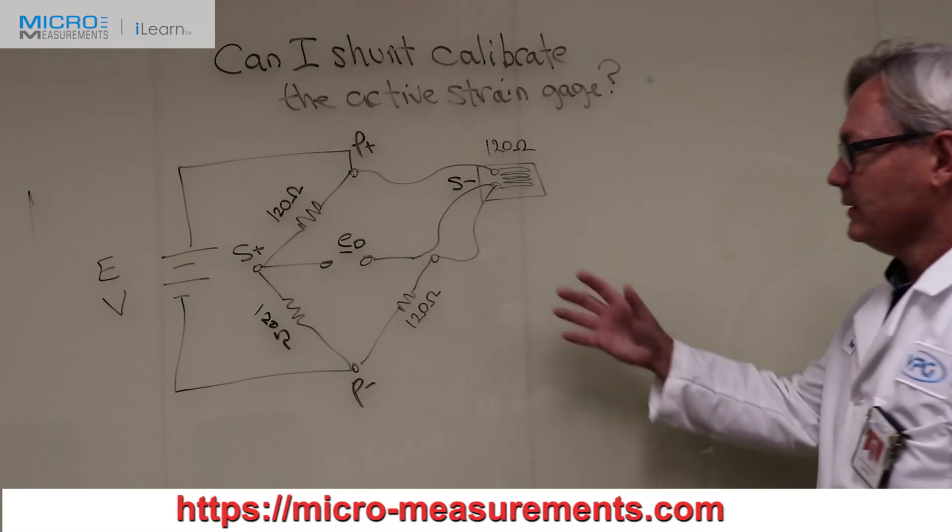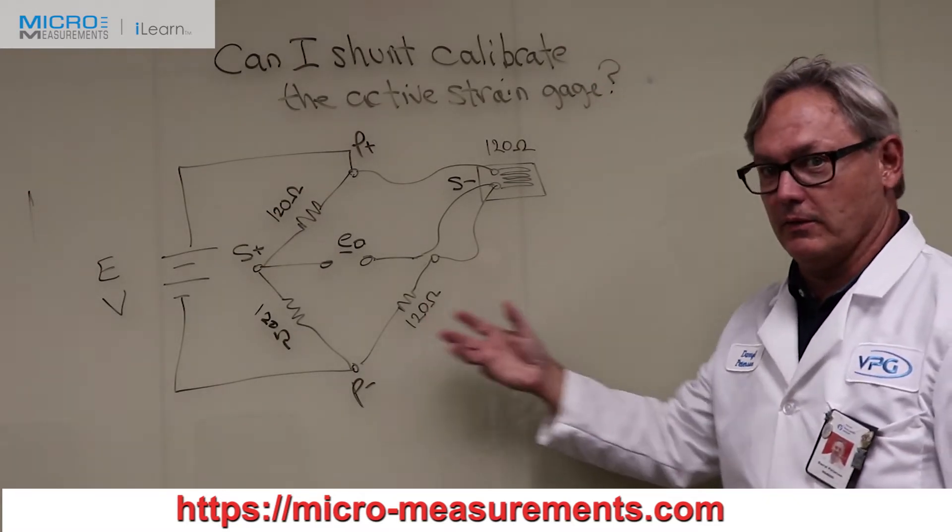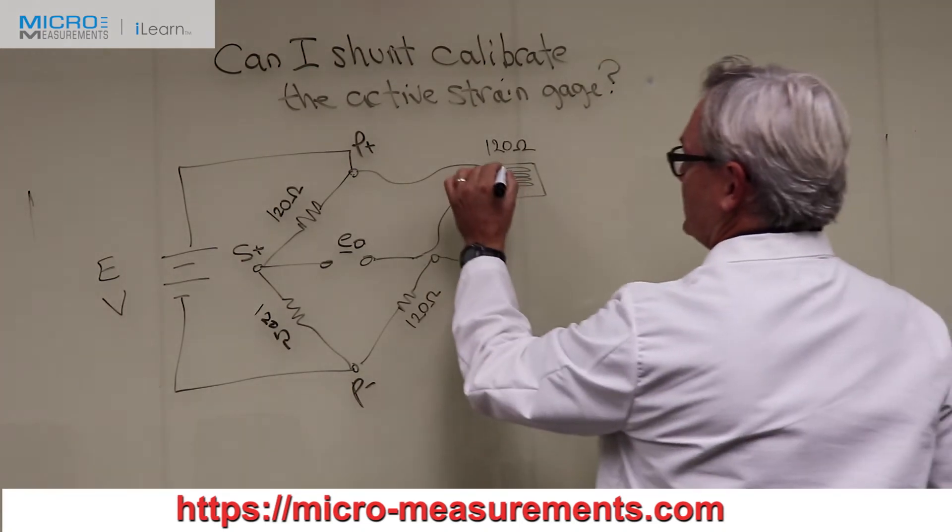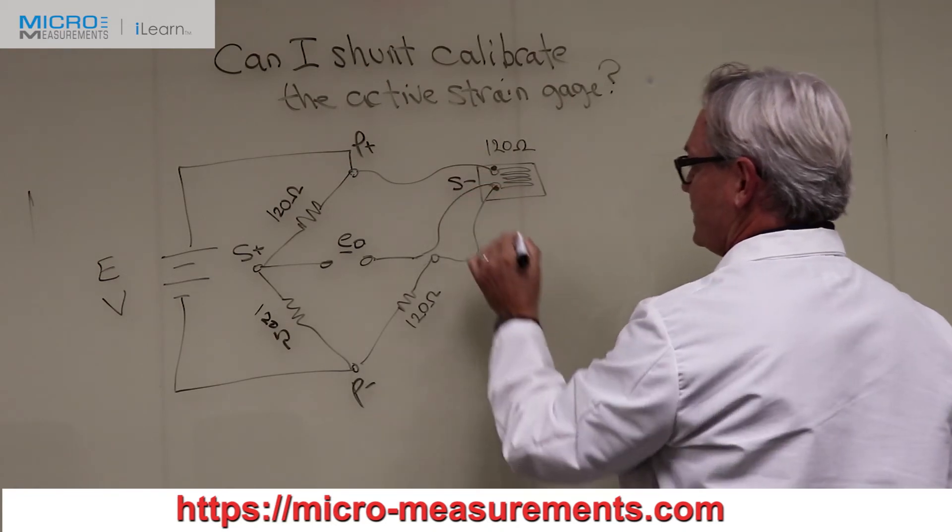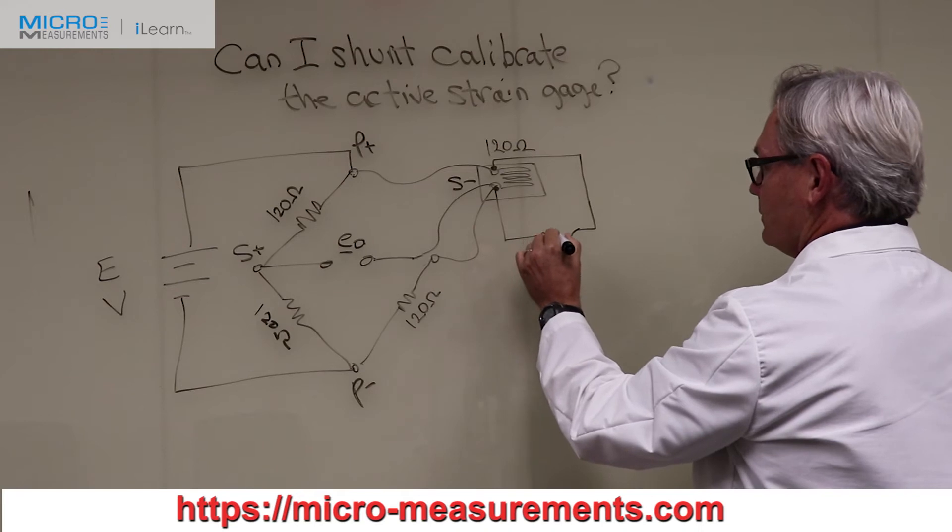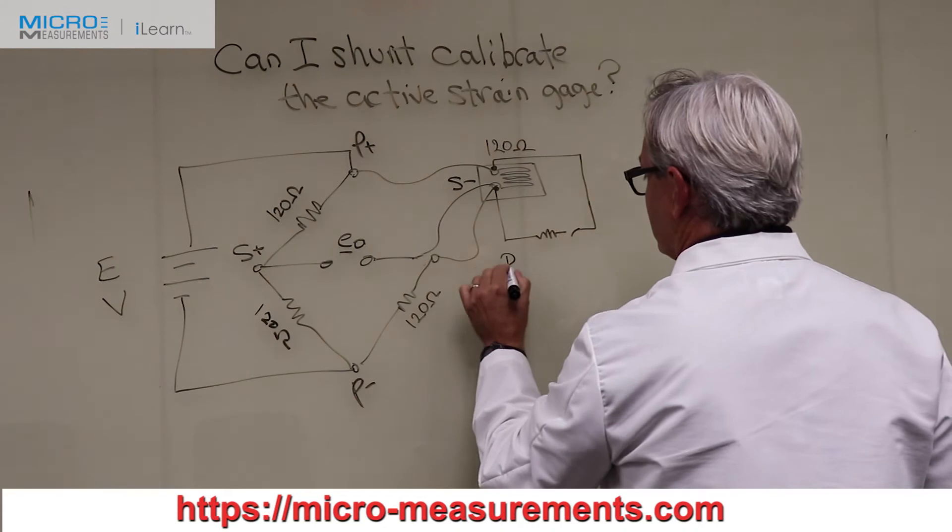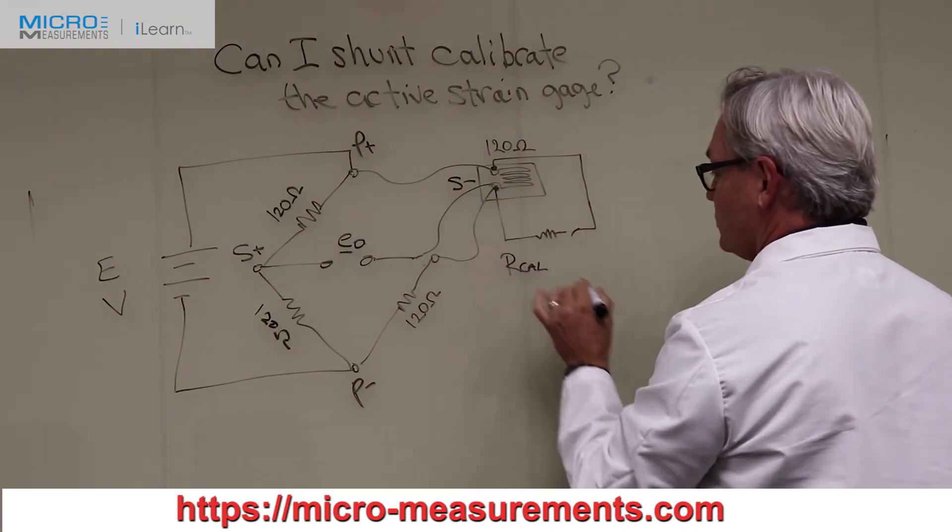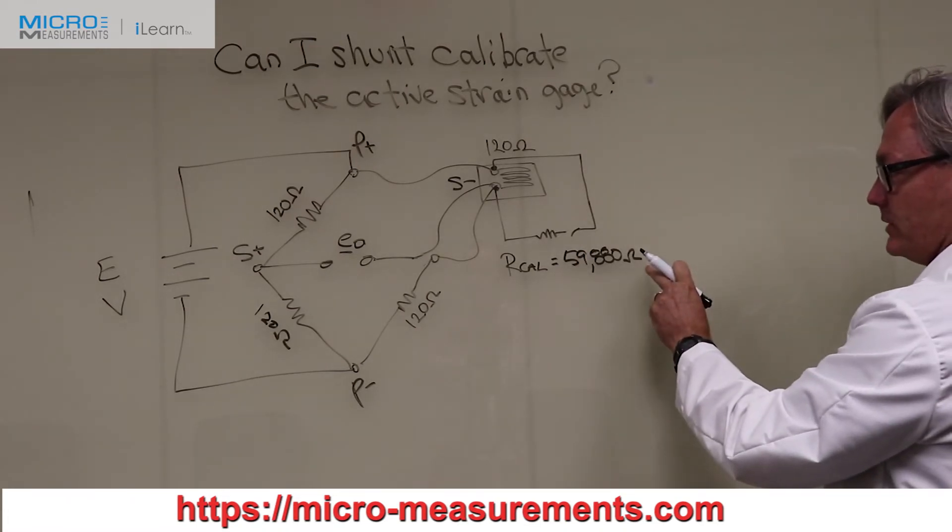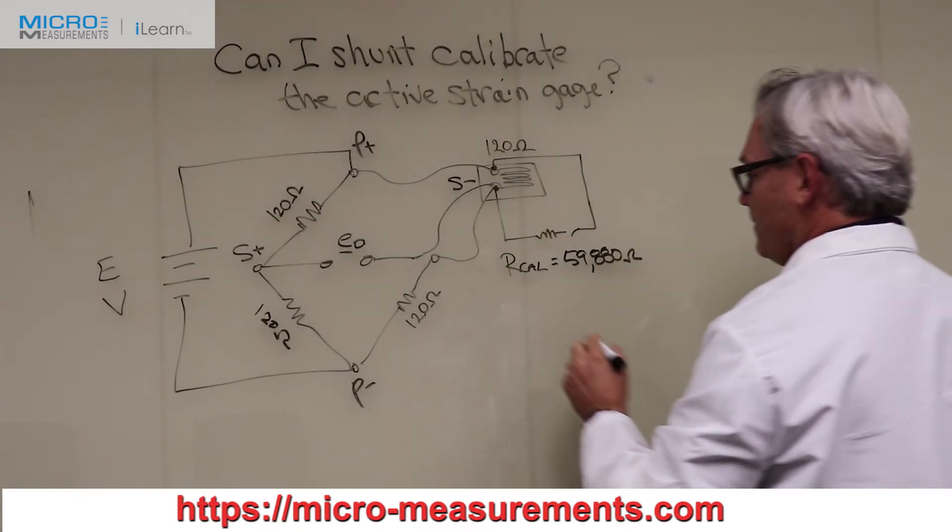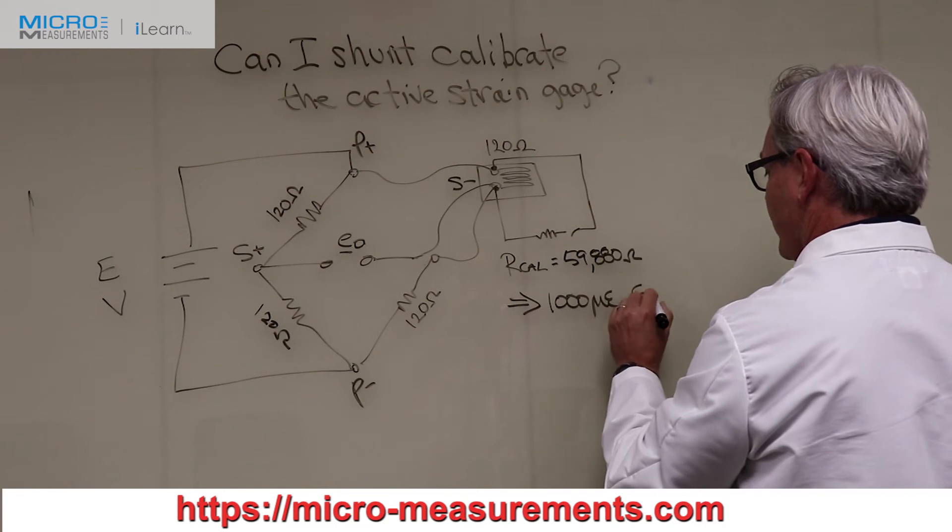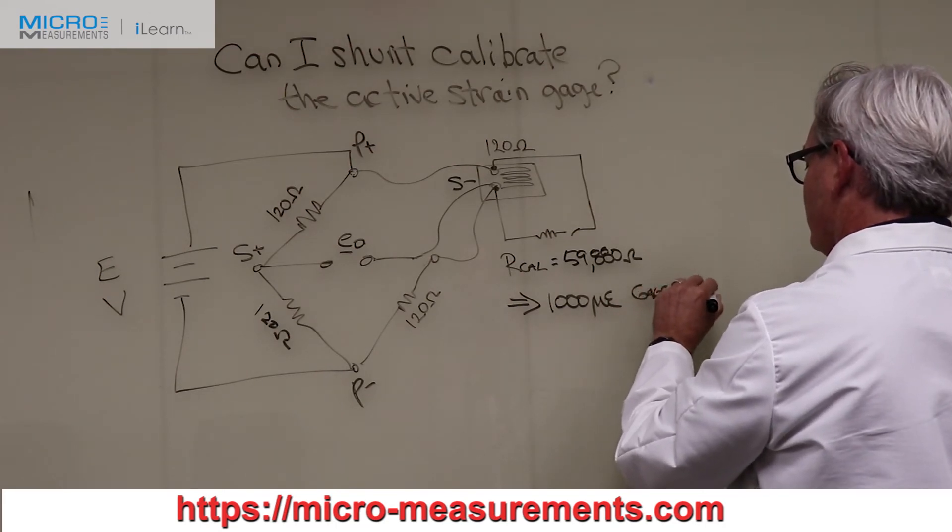Now, shunt calibration is a method that we use in order to scale this circuit. And a common question we get is, can I shunt calibrate the active strain gauge? And what that would mean is that we would have to take a resistor and connect it here across the tabs of the strain gauge. Typically, you would put a switch in that loop along with the resistor. And if I happen to pick this resistor, let's call this resistor R-CAL. And oftentimes, for a 120 ohm strain gauge, we would pick a resistor that's 59,880 ohms. The reason we picked this resistor is that if you take it and you shunt calibrate it across the 120 ohm strain gauge, that produces a simulated microstrain of 1,000. And that's based on a gauge factor equal to 2.